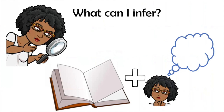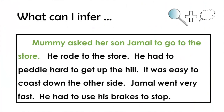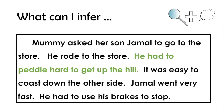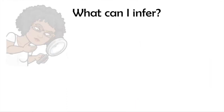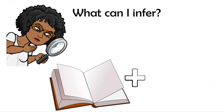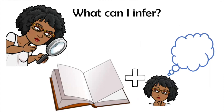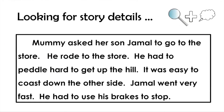Why don't we practice some more? Look at this short story. Let's read it together. Mommy asked her son Jamal to go to the store. He rode to the store. He had to pedal hard to get up the hill. It was easy to coast down the other side. Jamal went very fast — he had to use his brakes to stop. Now, boys and girls, what can you infer when you think about this story? Remember, we have to look in the story for our story details, using the clues in the text as well as what we already know in our heads to come up with a good inference.